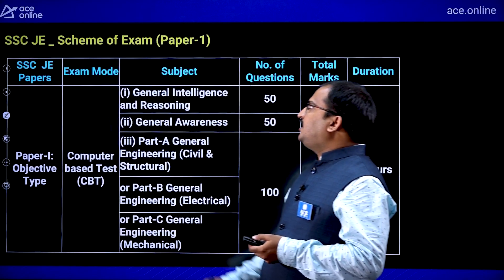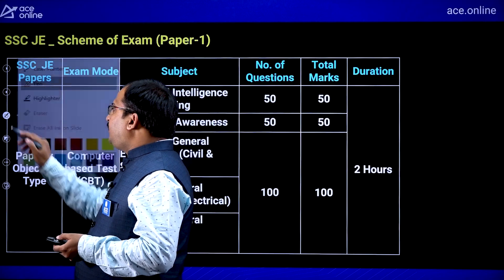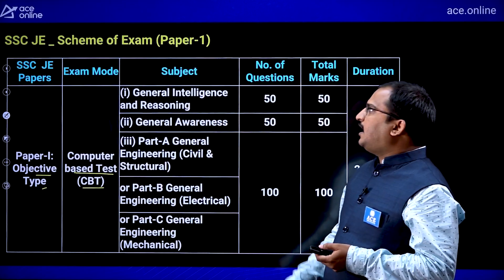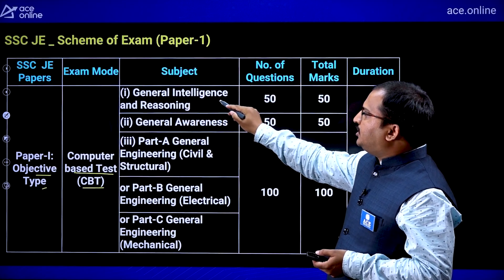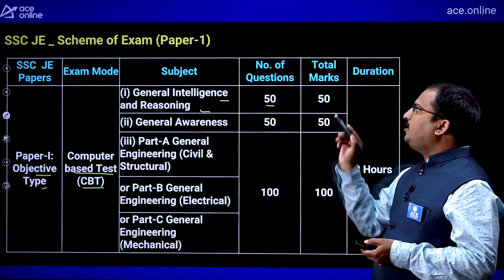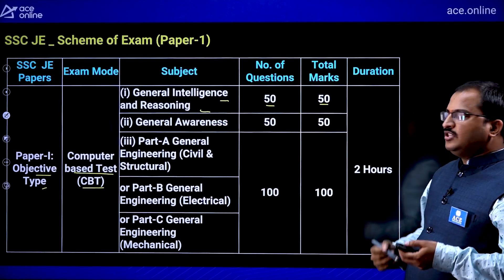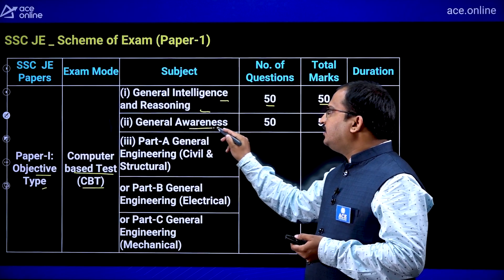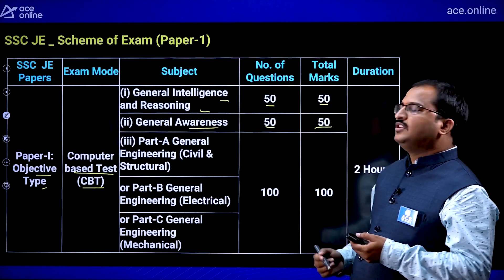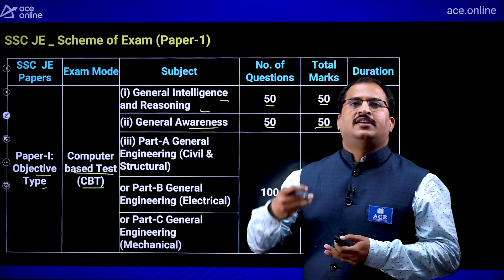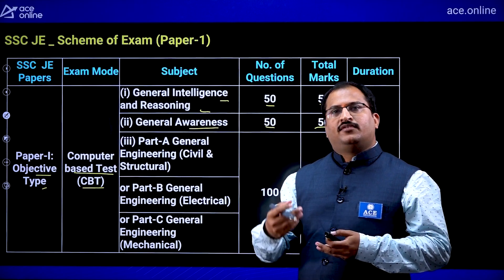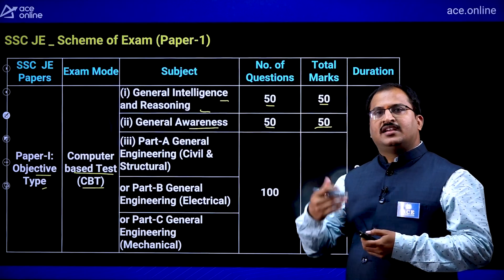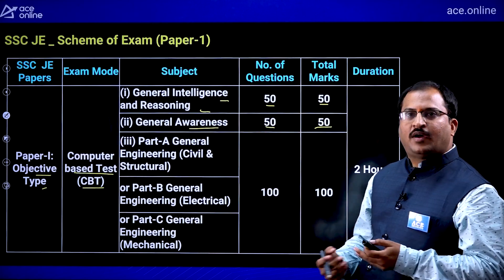Coming to the SSC JE scheme of examination — Paper 1. This paper is a computer-based test consisting of completely objective type questions. It has General Intelligence and Reasoning with 50 questions for 50 marks. Then, General Awareness consists of 50 questions and 50 marks, covering environmental studies, social studies, science, general knowledge, and current affairs. The weightage of the General Awareness part will be shown shortly.